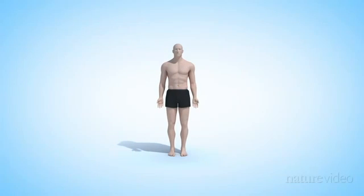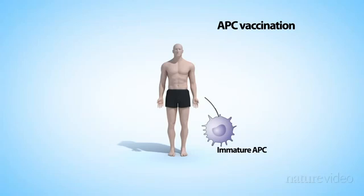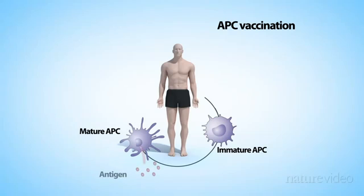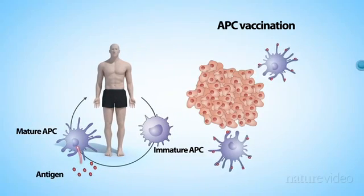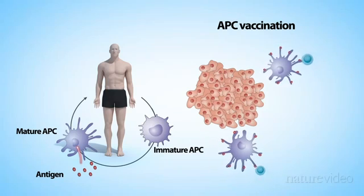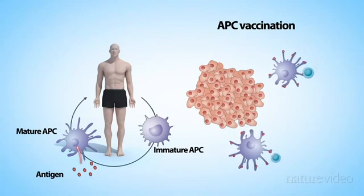But it's also possible to vaccinate with a person's own immune cells. For example, antigen-presenting cells can be taken from patients, matured outside the body, and loaded with tumour antigen. When the cells are reintroduced to the patient, the antigen stimulates other immune cells and helps them to recognise the tumour.